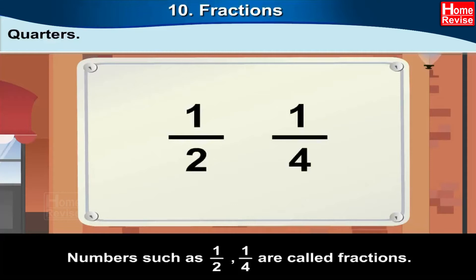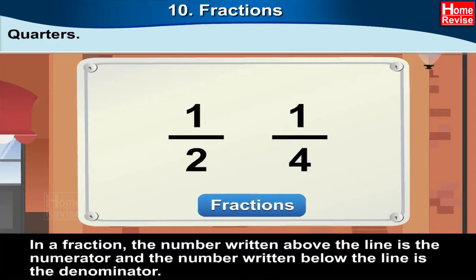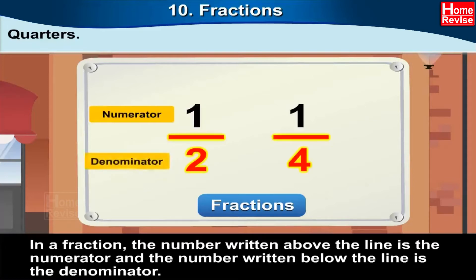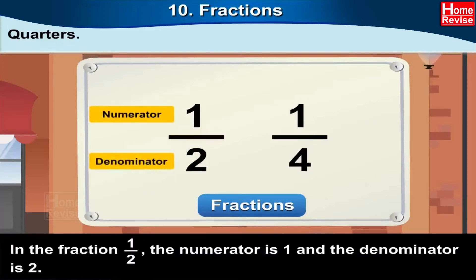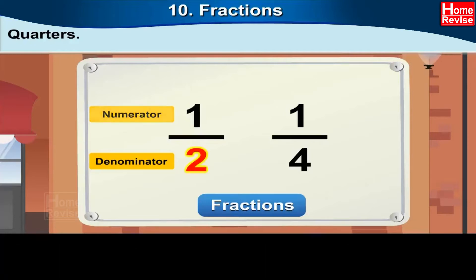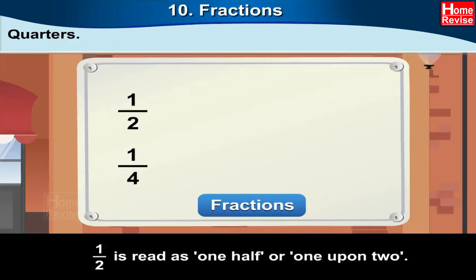Numbers such as one upon two and one upon four are called fractions. In a fraction, the number written above the line is the numerator and the number written below the line is the denominator. In the fraction one upon two, the numerator is one and the denominator is two. One upon two is read as one half.